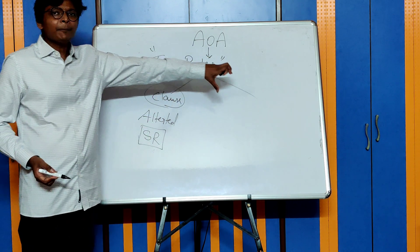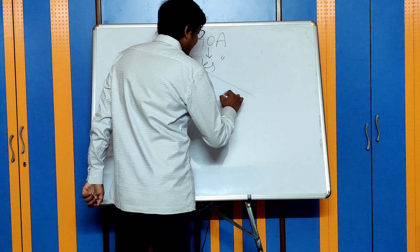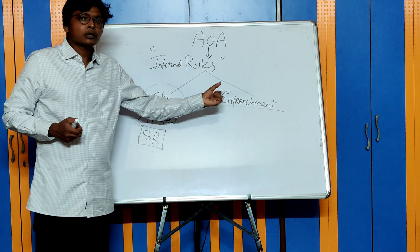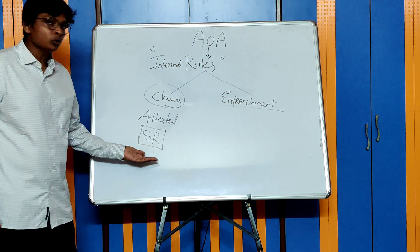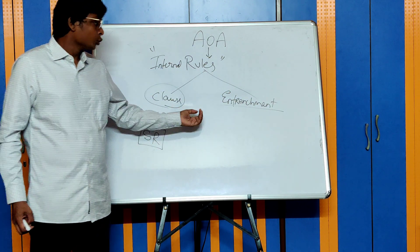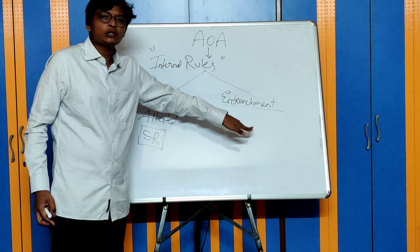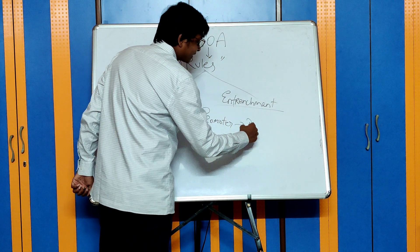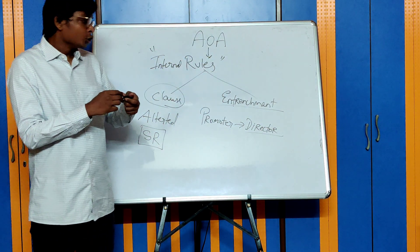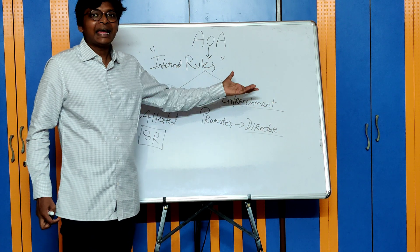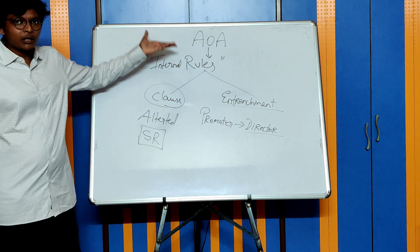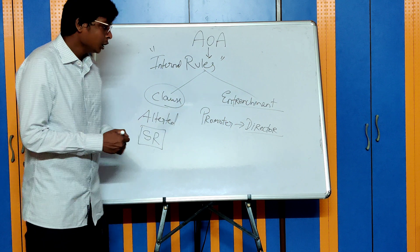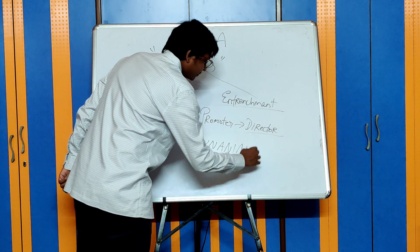The Companies Act 2013 introduced a new concept called the Entrenchment Provision. These clauses are much stricter in nature to change — to alter an entrenchment provision, a special resolution is not sufficient; you need to pass stricter resolutions which vary case to case. For example, a promoter who is a director can say that to remove the director, you need to pass a unanimous resolution. An entrenchment provision can be included in the AOA at the time of formation or at a later stage, but altering or adding one always requires a unanimous resolution from the members.